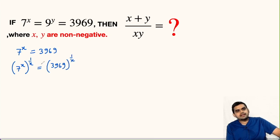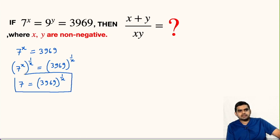So this will give us 7 = 3969^(1/x). Let us name this as equation 1.